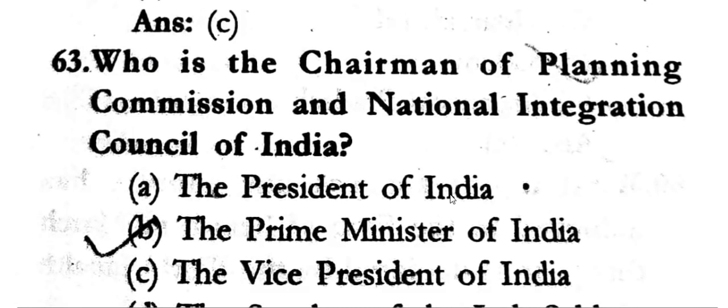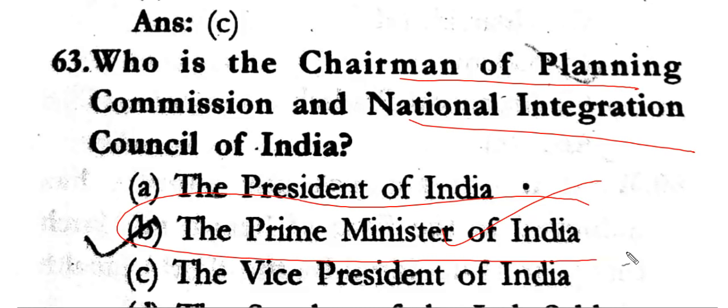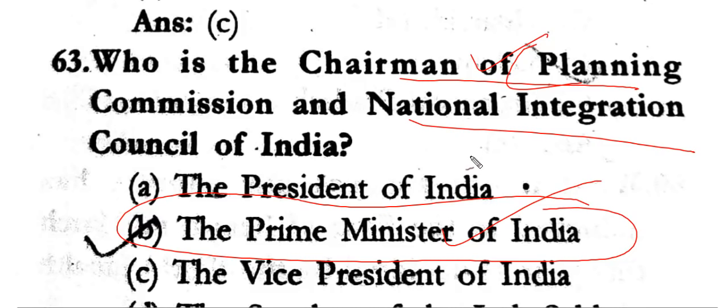Who is the chairman of the Planning Commission and National Integration Council of India? The answer is the Prime Minister. China acknowledged Sikkim as an integral part of India during the prime ministership of Atal Bihari Vajpayee.